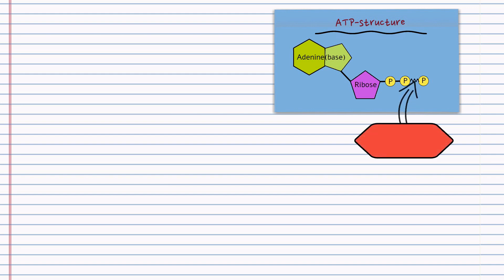So when you look at the structure of ATP, you can see that it has the nitrogen-containing base, adenine. It has the five-carbon sugar, ribose, and it has those three phosphate groups.